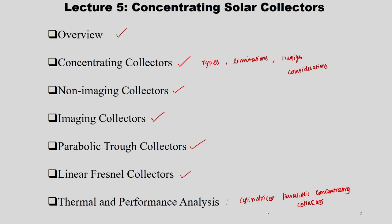For concentrating collectors, we need an extra optical system which concentrates solar energy for the solar collector. We are adding one more extra optical system, but we are not going to discuss in depth about the optical system. We are going to discuss concentrating solar collectors in terms of their types, varieties available, and also from a thermal point of view.